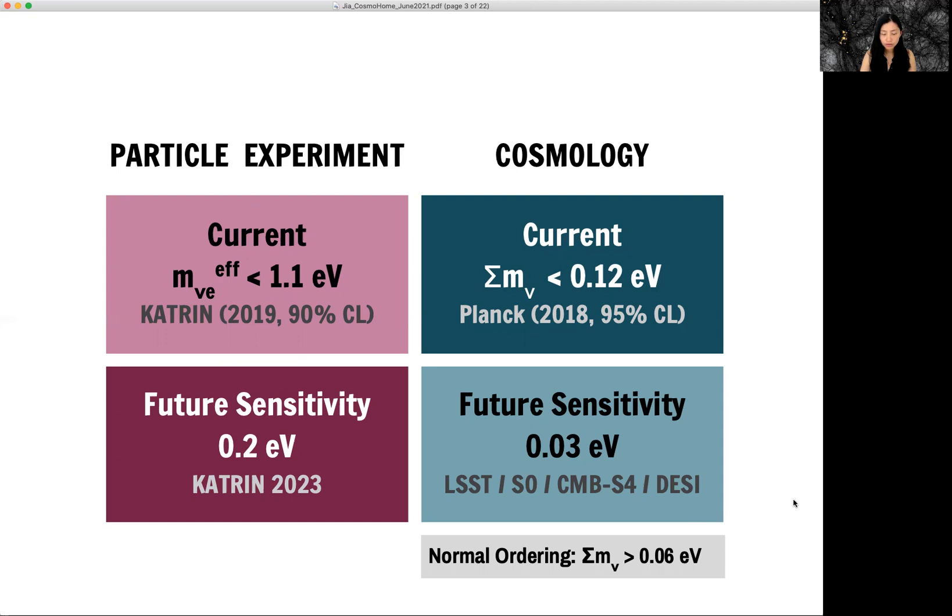And 0.03 EV is already lower than the minimum neutrino mass, 0.06 EV. So this mass is obtained from oscillation experiment.